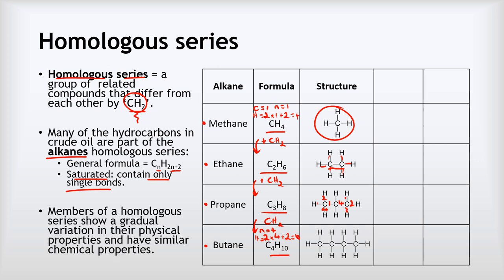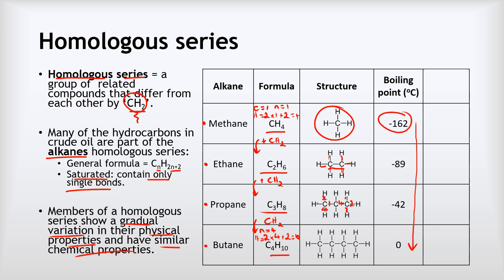Members of a homologous series show a gradual variation in their physical properties and have similar chemical properties. The similar chemical properties means they do the same kinds of reactions — for example, all of these alkanes combust, they burn in oxygen, which is why we use them as fuels. Looking at their physical properties, for example their boiling points: they've all got pretty low boiling points, but there's a gradual increase going from methane down to butane, with the lowest being methane at minus 162 degrees Celsius and butane boiling at zero degrees Celsius.